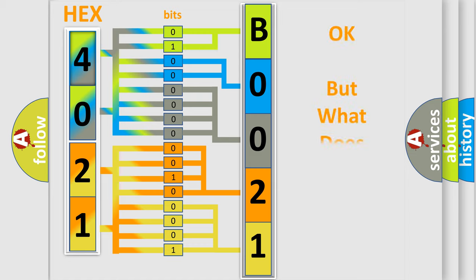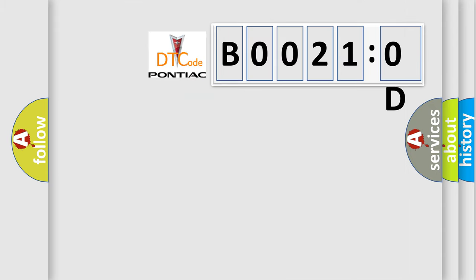The number itself does not make sense to us if we cannot assign information about what it actually expresses. So, what does the diagnostic trouble code E0021OD interpret specifically for Pontiac car manufacturers? The basic definition is: